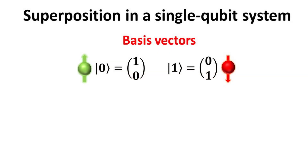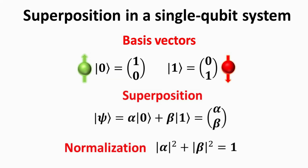We start with the simplest quantum mechanical system, that of a qubit. A qubit has a two-dimensional state space spanned by the two basis vectors denoted as the zero and one ket. A physical example of such are the up and down spin states. An arbitrary state vector psi can be written as a superposition of these two bases, where alpha and beta are complex numbers, and the sum of their modulus square must be normalized to one. This ensures that the inner product of the state vector psi is one.